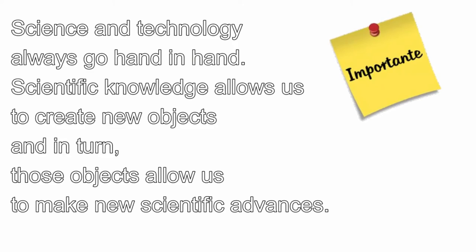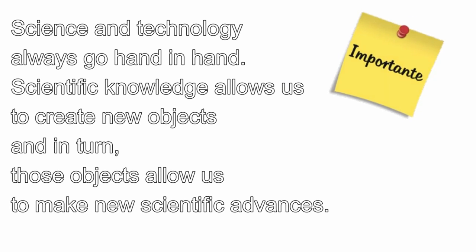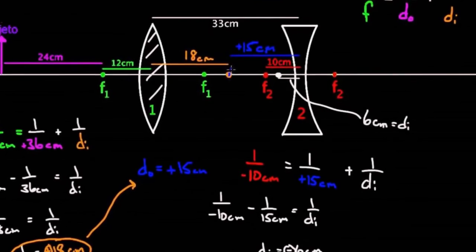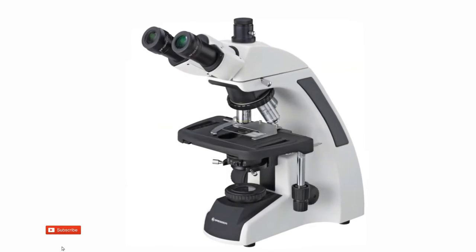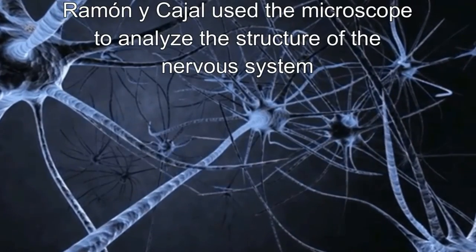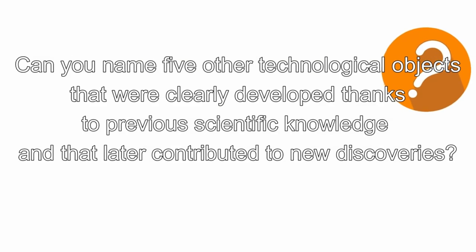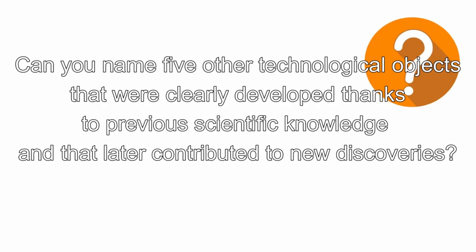Science and technology always go hand in hand. Scientific knowledge allows us to create new objects. For example, the study of optics allowed us to create better microscopes, and in turn, microscopes allowed us to make new scientific advances. Can you name five other technological objects that were clearly developed thanks to previous scientific knowledge and that later contributed to new discoveries?